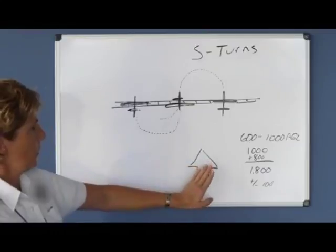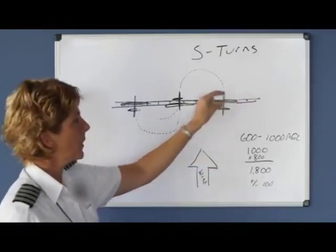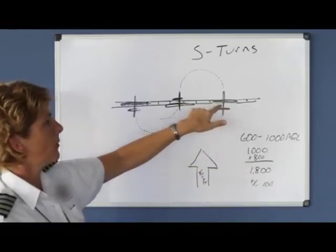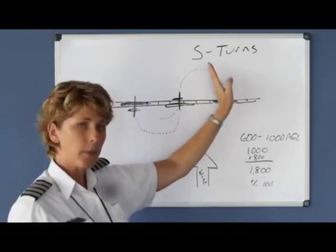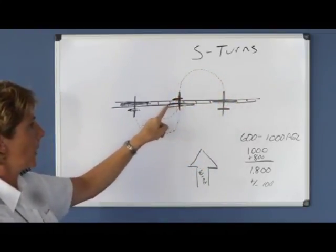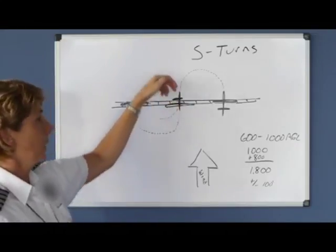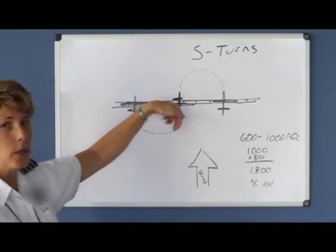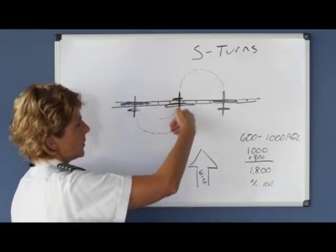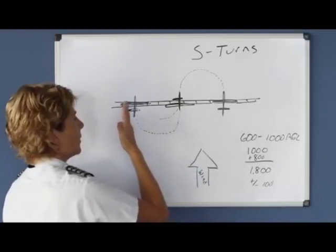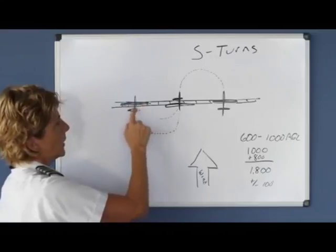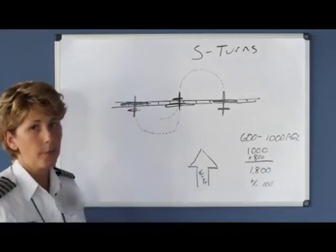So those would be your S-turns. You start with a tailwind, find something perpendicular to the wind, and when your wings are parallel to the reference line, you begin a nice coordinated turn — typically about 30 degrees — then time your rollout so your wings are back parallel to the reference point. Be patient as you fly back into the wind, because you'll have a slower ground speed. Get yourself out in position before increasing the bank angle again, then time it to roll back out with your wings parallel the reference point.